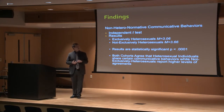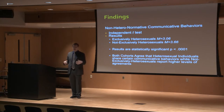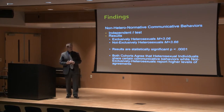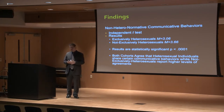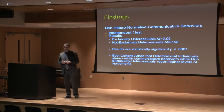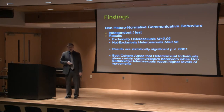The next measurement was non-heteronormative communicative behaviors — do members of each cohort believe that non-heterosexual individuals communicate in certain ways? A t-test was conducted, and we found that exclusively heterosexuals had a mean of 3.06, meaning they generally agree, while non-exclusively heterosexuals had a higher mean of 3.66, agreeing more than the heterosexuals. These results were also significant at the .001 level. Both cohorts agree that non-heterosexual individuals share certain communicative behaviors, while non-exclusively heterosexuals report higher levels of agreement — they believe that non-heterosexual individuals do share certain behaviors.